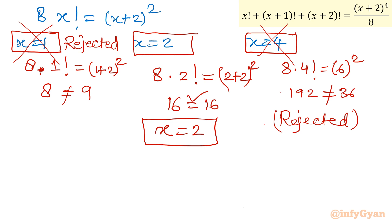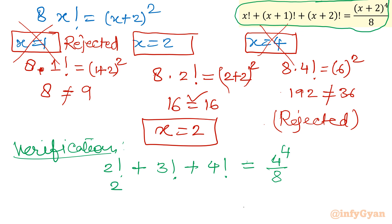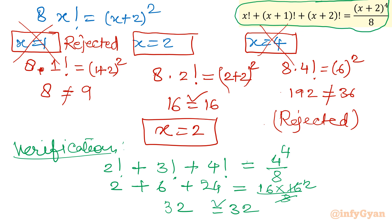Let us verify by substituting x=2 into the original equation: 2! + 3! + 4! = 2 + 6 + 24 = 32 on the LHS. On the RHS: (2+2)^4 / 8 = 4^4 / 8 = 256/8 = 32. LHS equals RHS, so the solution is confirmed.